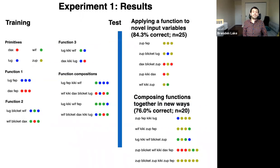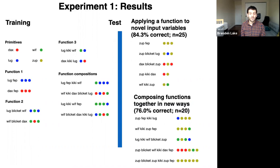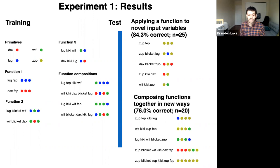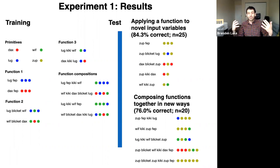Here's what we found. The overall level of performance was quite good. In terms of applying a function to novel input variables, performance is around 84% correct for people — compared to single digits for basic networks. In terms of composing functions together in new ways, participants were about 76% correct. Importantly, participants had to produce longer sequences than ever seen during training — exactly what networks failed on, like sequences of six or more — and they were only trained on two function compositions but could generalize to three.